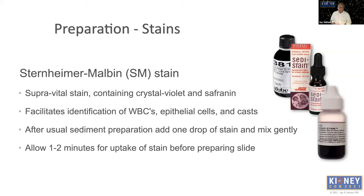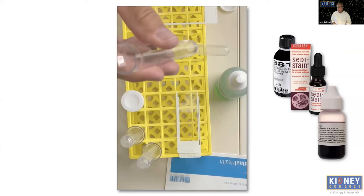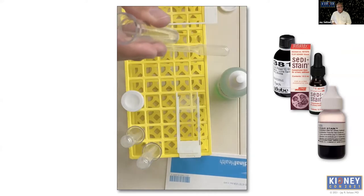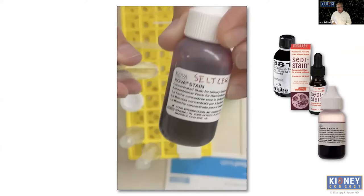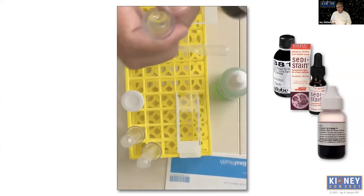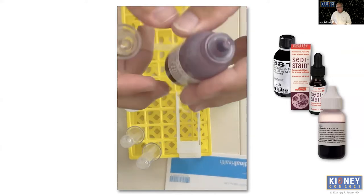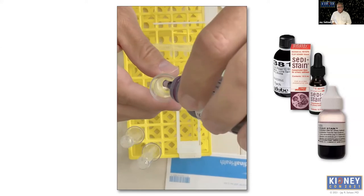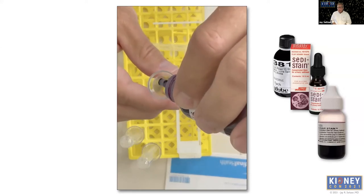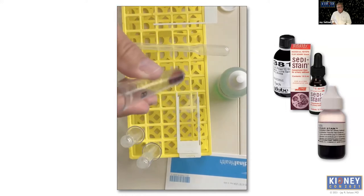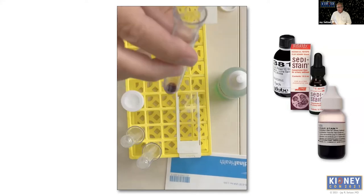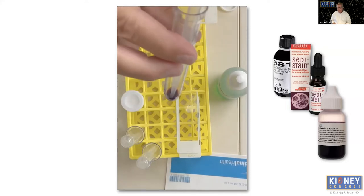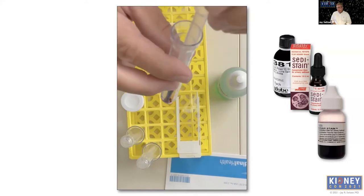The stain we'll talk about primarily is the Sternheimer Malbin stain — a stabilized version containing crystal violet and safranin. It's a super vital stain, allowing you to look at live cells, and greatly facilitates identifying white blood cells, epithelial cells, and the cast protein matrix. It's very simple: after usual sediment preparation, add one drop of stain, mix it gently, and allow one to two minutes for stain uptake. I tend to use the Kova brand, which seems to provide better coloring, though other brands are available.